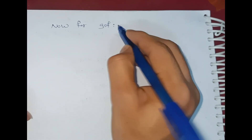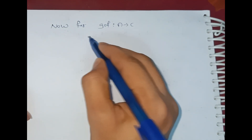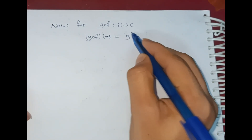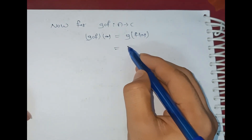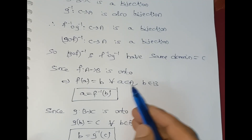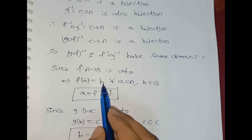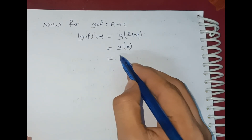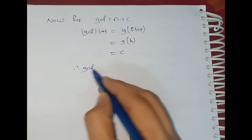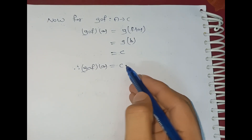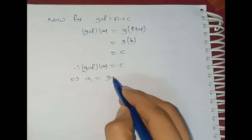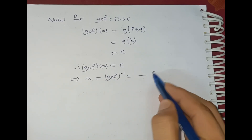Now, for g∘f mapping A to C: (g∘f)(a) = g(f(a)). Since f(a) = b, this becomes g(b), and since g(b) = c, we get (g∘f)(a) = c. Therefore a = (g∘f)⁻¹(c). This is Equation 1.